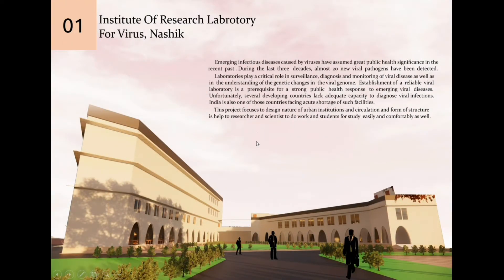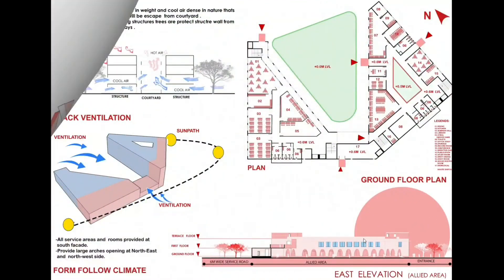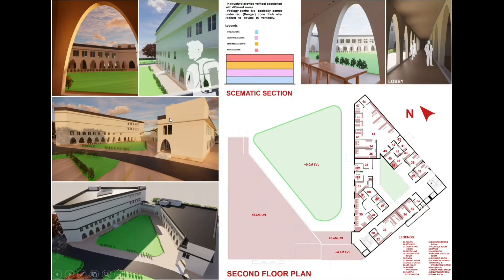This is the first project of my portfolio, which is the Institute of Research Laboratory for Virus. This shows the front view with a brief description of the project and what I wanted to achieve. The second page of the first project has conceptual drawings on the left side with the site plan and elevation. The third sheet has conceptual drawings with plan and elevation again. The fourth sheet gives some 3D views with conceptual drawings and the plan. If you want a more detailed video, you can click the link to get the detailed video of this project.